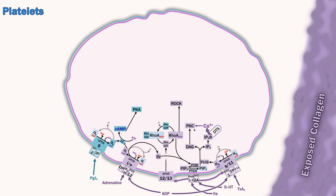The PAR receptors are unique thrombin receptors that are activated through irreversible cleavage by thrombin rather than reversible agonist binding. Thrombin is the most potent endogenous agonist for platelet activation. Platelet activation is not one single event, but a combination of processes, some of which can happen reversibly. One major element involves a second small G-protein, RAP1B. Like Rho, it toggles between active and inactive based on stimulating and inhibiting factors.